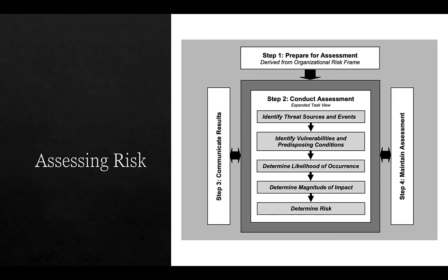To assess risk, an organization will prepare for the assessment, derived from an organizational risk frame. The organization will have established what its risk appetite is, which may come from a number of different sources — such as the sector it operates in. For example, if you're dealing with people's health you may quite rightly be more risk averse than if you are essentially selling ice creams.